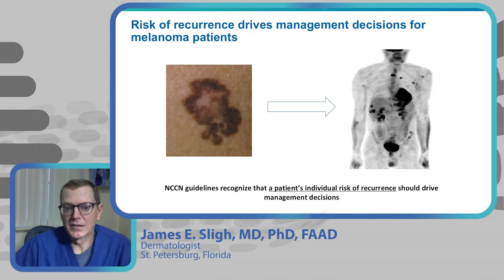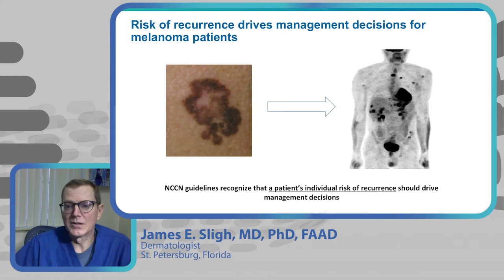What information do we really want from our pathologist? Besides the diagnosis, the most important thing is Breslow's depth, because historically speaking, it is the most accurate predictor of what's going to happen — potentially what we see on the right part of this slide, which is a PET scan showing a patient with multiple metastases.